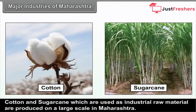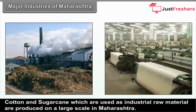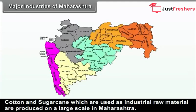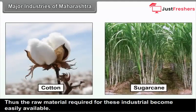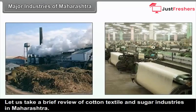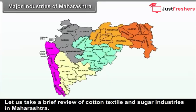Cotton and sugarcane, which are used as industrial raw materials, are produced on a large scale in Maharashtra. Thus, the raw material required for these industries becomes easily available. Let us take a brief review of cotton textile and sugar industries in Maharashtra.